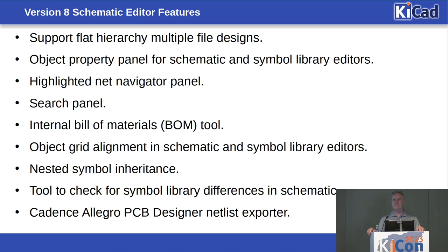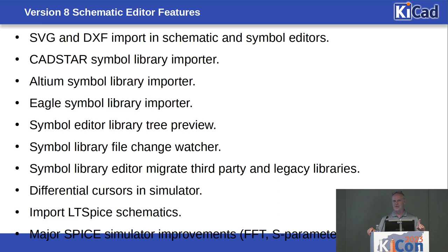We now have nested symbol inheritance — currently you can only do one level of inheritance, but in version 8 you'll have infinite levels. There are also tools to check for symbol library differences, just like there were for footprint libraries in version 7. We added Cadence Allegro PCB designer netlist export, so you can do your schematics in KiCad and export the netlist into Cadence. We also added SVG and DXF import into the schematic and symbol editors, a CADStar symbol library importer, an Altium symbol library importer, and an Eagle symbol library importer.